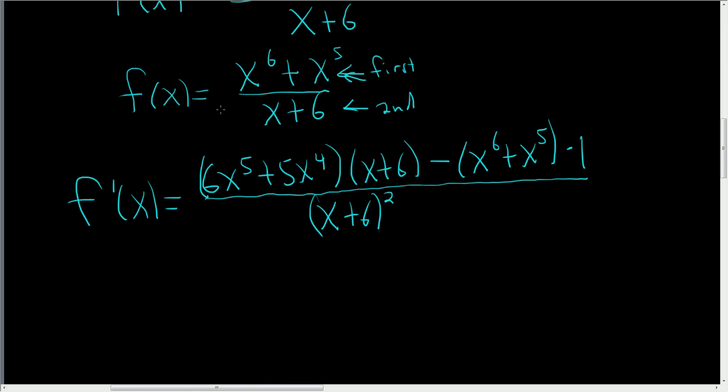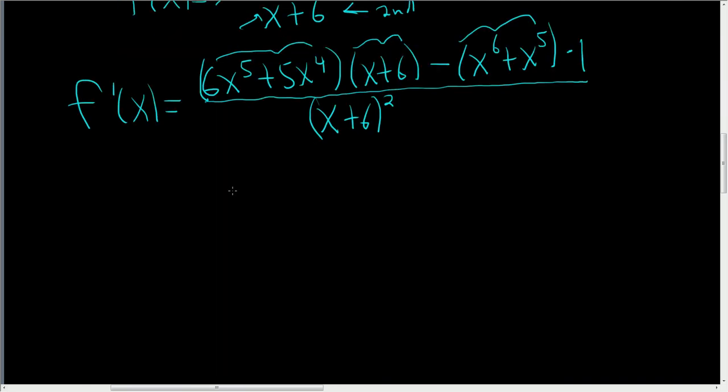Let's check this. So the derivative of the first piece is 6x to the fifth plus 5x to the fourth. Yep, looks okay. Times the second piece looks okay. Minus the first piece times the derivative of the second. Well, the derivative of the second is just 1, so it looks okay. Now we'll distribute, and this is the part where I always mess up. Anyone can mess up here. You just have to be careful.